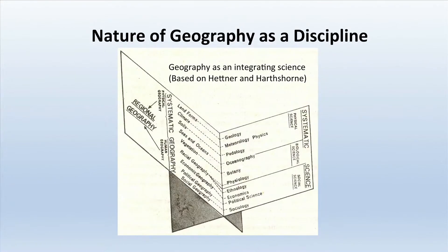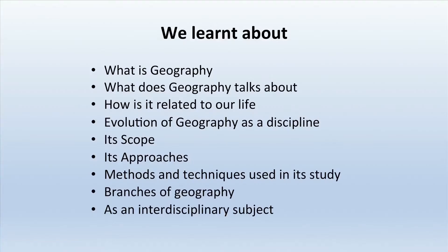The nature of geography as a discipline is that of a systematic science with several branches — physical, human, and regional — all studied together. As shown in the diagram given by Hettner and Hartshorne, it integrates landforms, soils, seas and oceans, vegetation, racial geography, economic geography, botany, physiology, economics, and political science — everything interconnected on a single platform that is geography. Geography studies the patterns on the earth's surface and the relationships between human and physical aspects as an interdisciplinary synthesis.